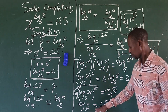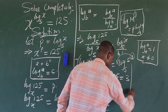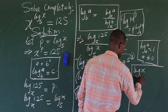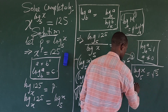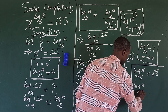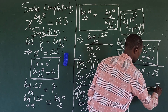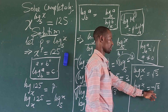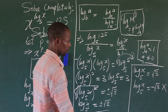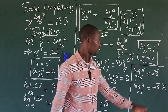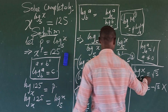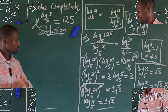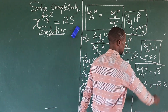From here we have two cases. Case one: log_x(5) equals positive √3. Case two: log_x(5) equals negative √3. However, since we are dealing with logarithms, we cannot have a negative value on this side, so the negative case is discarded. We take only the positive case.